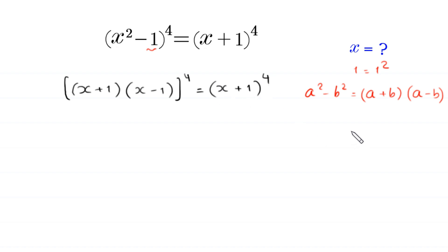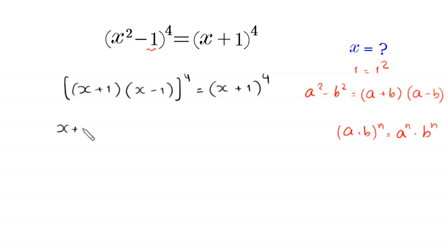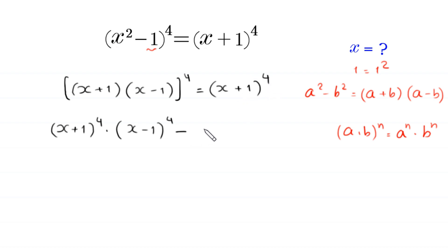By using the power rule (a·b)ⁿ = aⁿ·bⁿ, this power 4 distributes over both factors, giving (x + 1)⁴ · (x - 1)⁴ = (x + 1)⁴. We then move the right-hand side to get (x + 1)⁴ · (x - 1)⁴ - (x + 1)⁴ = 0.